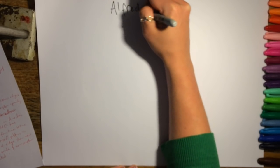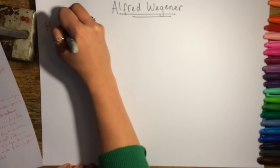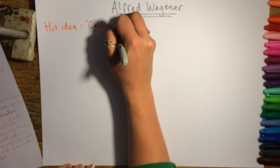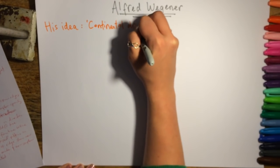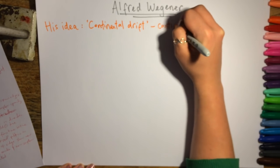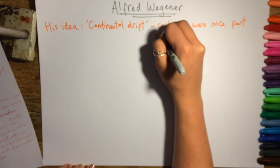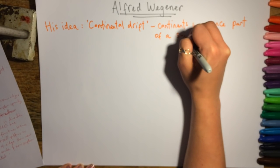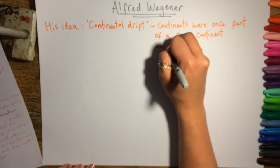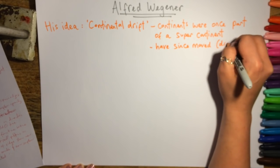This video is going to be all about Alfred Wegener. His idea was called Continental Drift, and it was pretty self-explanatory. The continents used to be part of what he called a supercontinent, and since then they've drifted or moved apart. So the world as we see it today was not how it was millions of years ago.